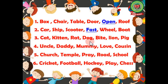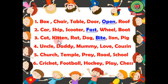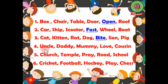The answer is 'bite'. Cat, kitten, rat, dog, lion, and pig are all names of animals, so they are nouns. But 'bite' is not a naming word, so we underline 'bite'. Now number four: uncle, daddy, mummy, love, cousin.